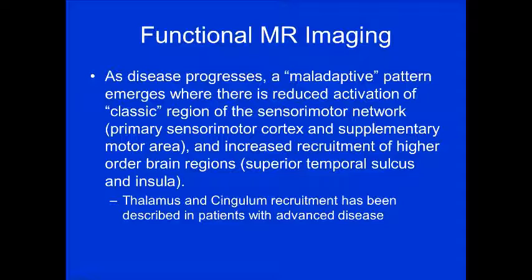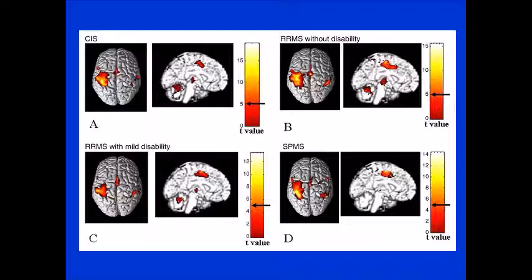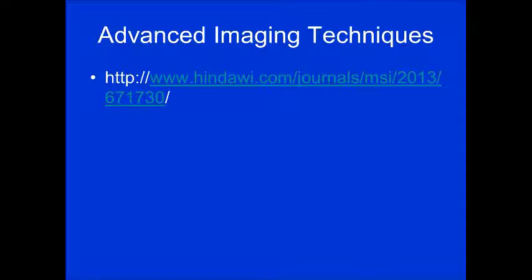In functional MRI, early in the disease you see recruitment of normal areas, then bilateral activation followed by widespread recruitment as myelin continues to break down. As the disease progresses, a maladaptive pattern emerges. Functional MRI may represent the future of MS evaluation.